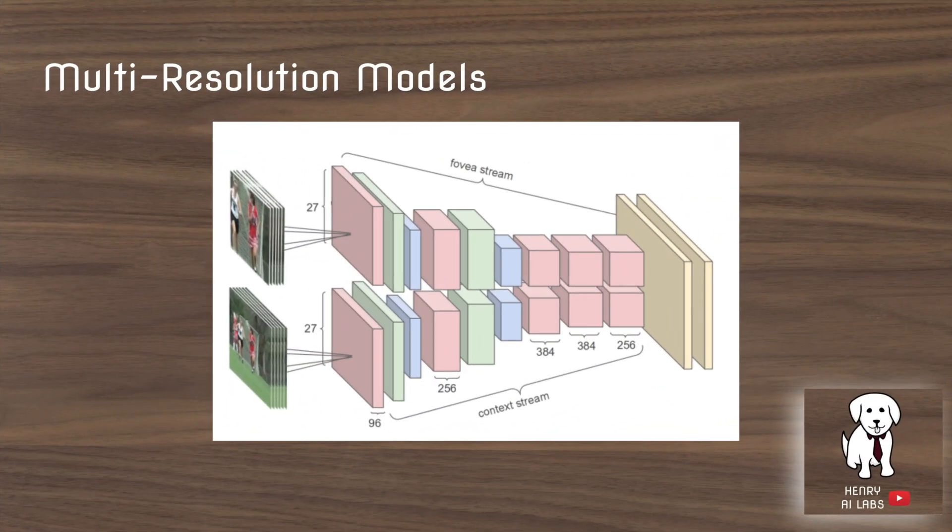This is an overall diagram showing how the multi-resolution model works. On the top is the center crop from the original high-resolution image, and on the bottom is the down-sized original image.